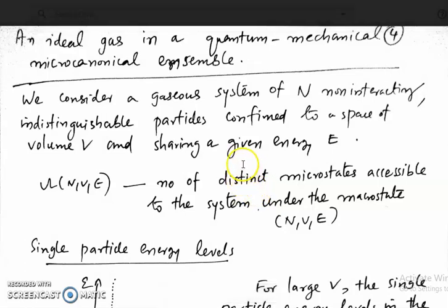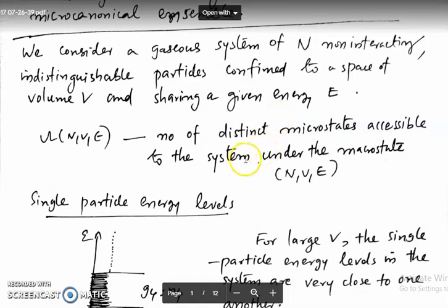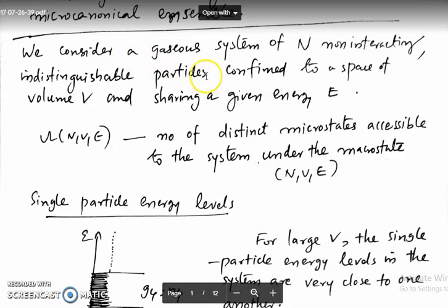Let us continue our discussion on the ideal gas in a quantum mechanical microcanonical ensemble. We revisit what we have seen in the last classes. We consider a system of N non-interacting distinguishable particles confined to a volume V having energy E.